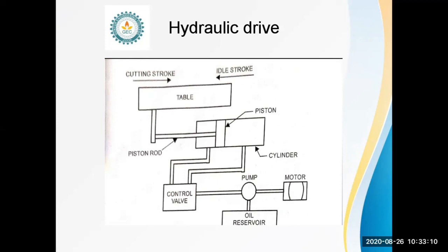At the end of each stroke, trip dogs operate a lever which actuates the control valve to change the flow of oil from one side to the other side of the cylinder. The length of the stroke can be varied by adjustment.